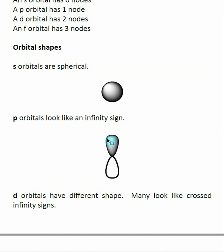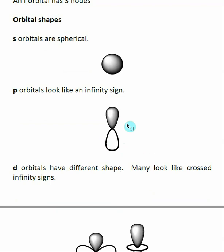A p orbital looks like an infinity sign, and we see the first node right at the center where the probability density is zero. The two lobes are shown in different colors, which represents the sign of the orbital — this will become important when we discuss bonding using these orbitals. p orbitals actually have directions, which we don't need to fully understand right now but will become important during bonding discussions.